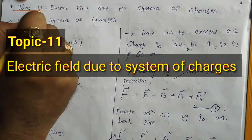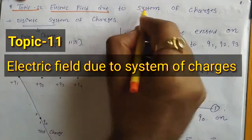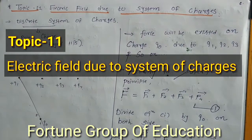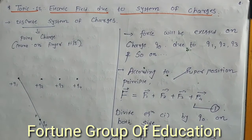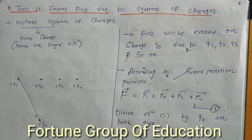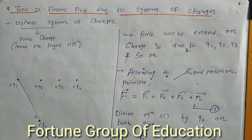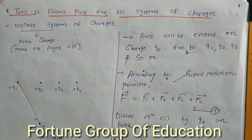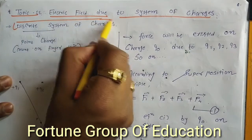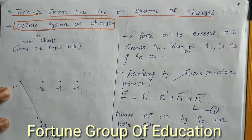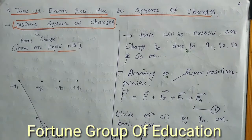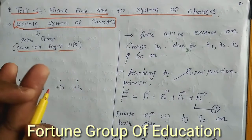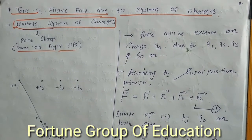Our next topic is electric field due to system of charges. There are two systems of charges: one is the discrete system of charges and the second is the continuous system of charges. A discrete system means it consists of point charges that we can count on our fingertips — one charge, second charge, third charge, fourth charge, fifth charge.